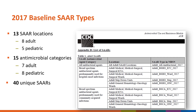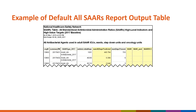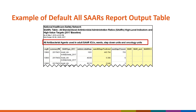40 unique SARs can be generated using combinations of the 2017 Baseline SAR locations and antimicrobial categories. A list of all possible SAR combinations is available in Appendix D of the AUR Module Protocol. Let's review the default view of the output tables for the All SARs report. As shown in the screenshot, the first SAR table is all antibacterial agents used in adult SAR intensive care units, or ICUs, wards, step-down units, and oncology units. Within the report, each SAR type will be shown in a separate table. If data have been entered for all applicable SAR location types, the pattern continues for the remaining 39 SAR tables.